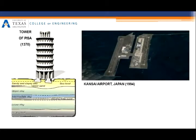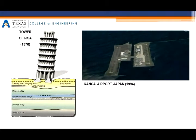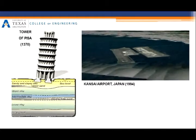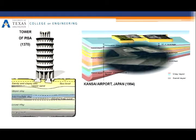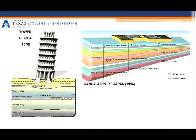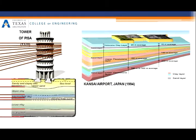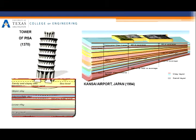Even recent projects such as the Kansai Airport experienced considerable settlements due to the misinterpretation of subsurface soils. In both cases, as in most geotechnical projects, soil layers were assumed to vary linearly in the lateral direction, as shown by the red lines in the given soil profiles.